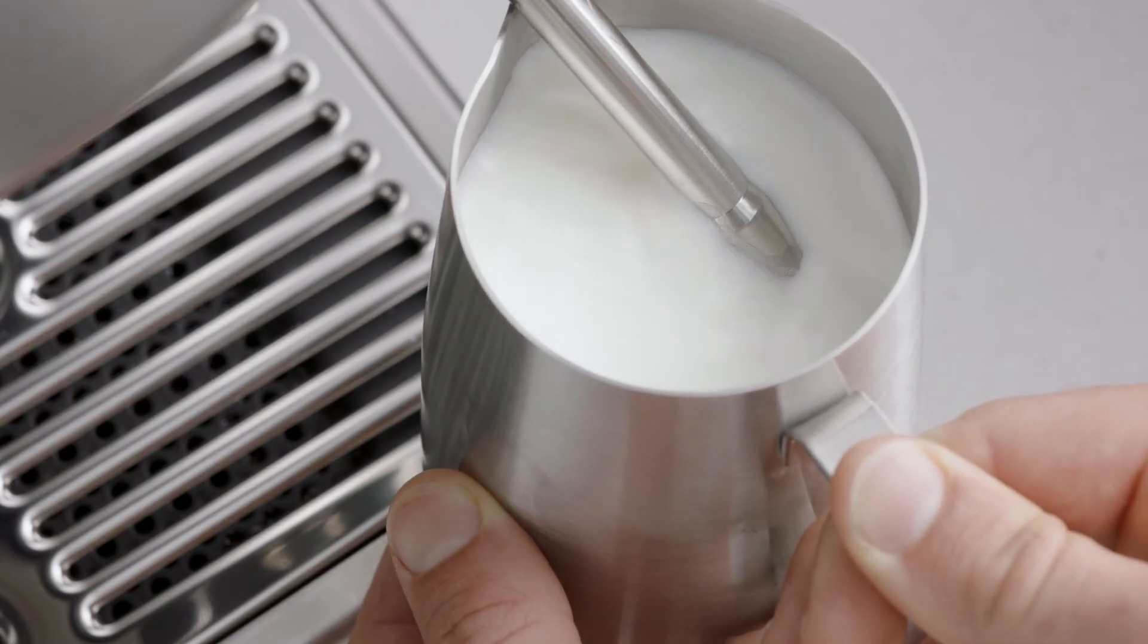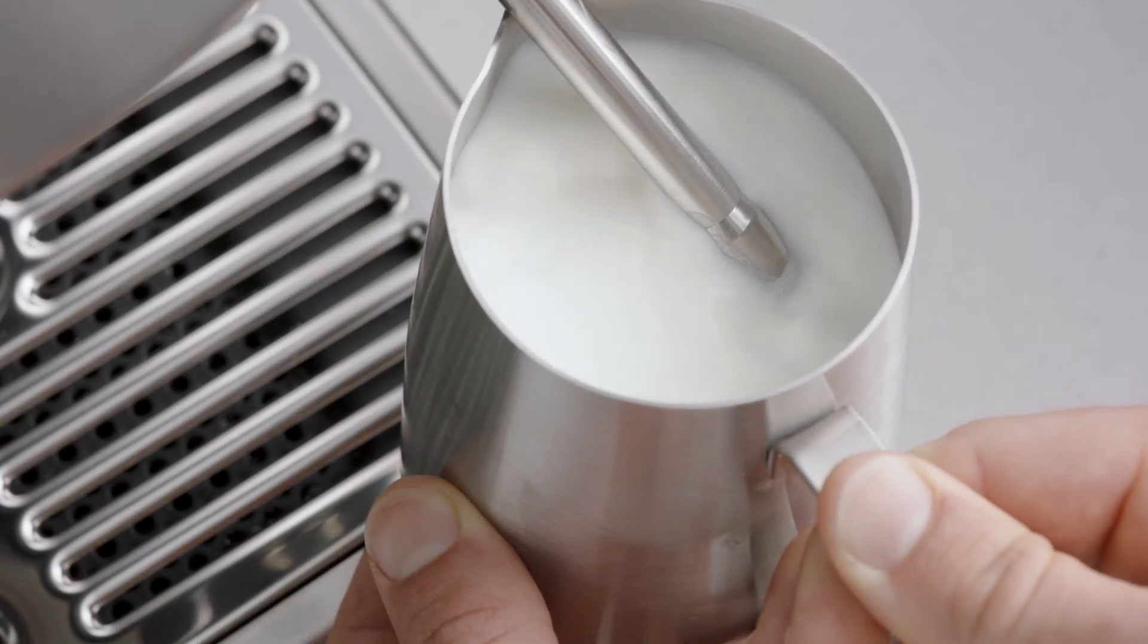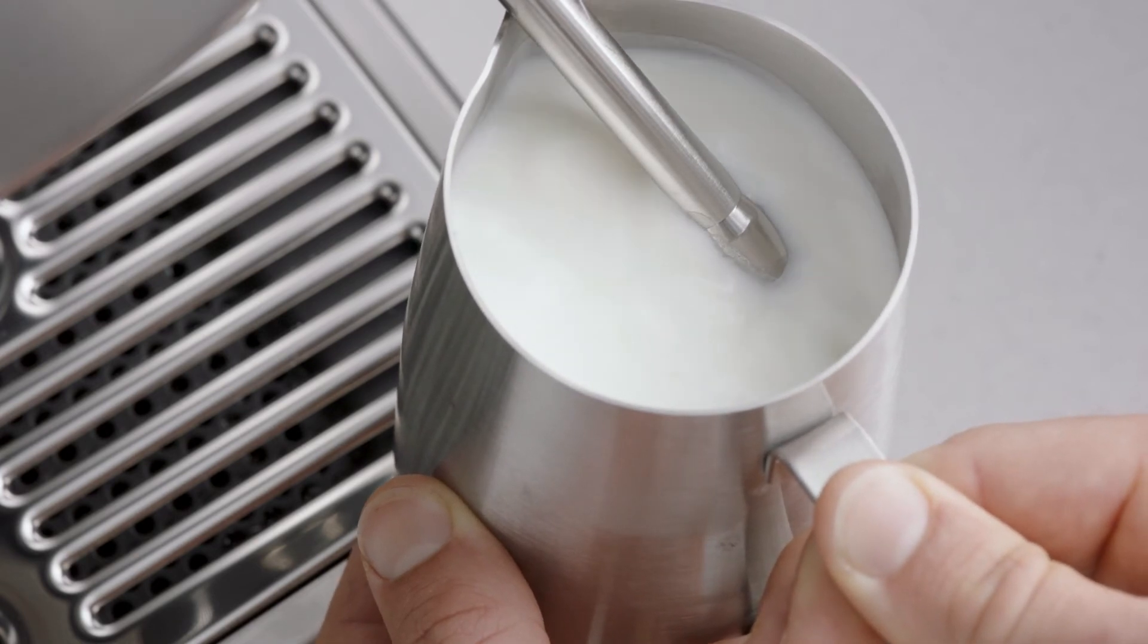Keep the tip at or slightly below the surface while continuing to maintain the whirlpool. Texture the milk until sufficient volume is obtained.